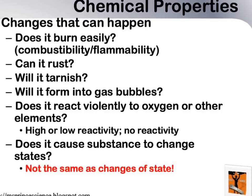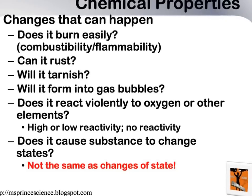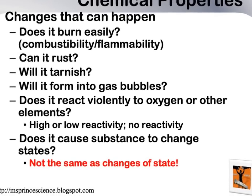Chemical properties describe changes a substance may undergo during a chemical change. It doesn't mean that the changes have already taken place — it's like Superman. He has the ability to fly, but it doesn't mean that he's up in the air flying at the moment. Chemical properties tell you what can potentially happen when the substance interacts with another, but it doesn't mean that the change is taking place at that moment.